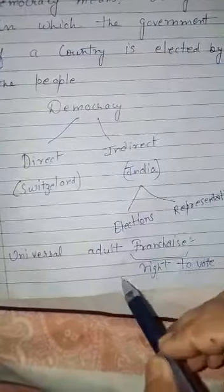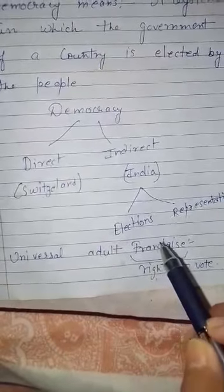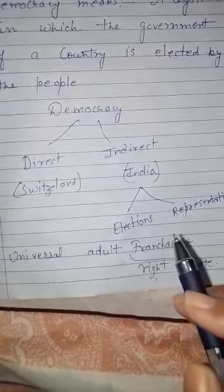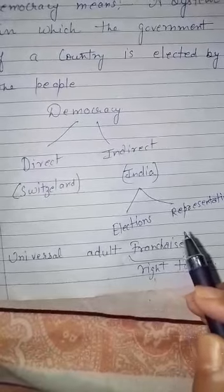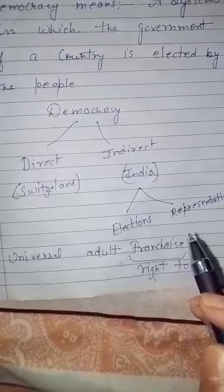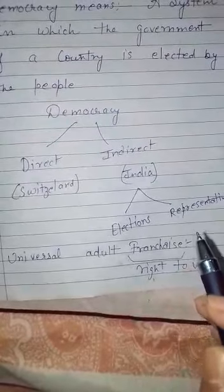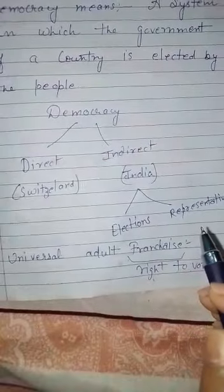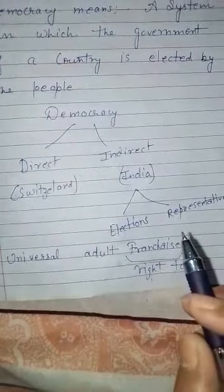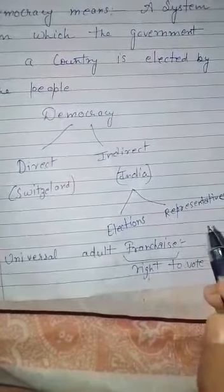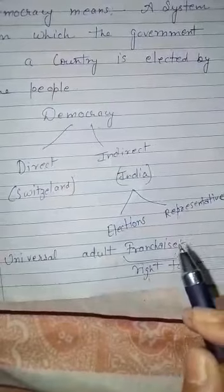This voting right is given to all the people of the country irrespective of religion, caste, gender, property, and educational qualification. It means all people who are 18 and above can participate in the election process.